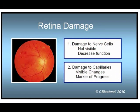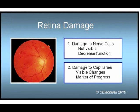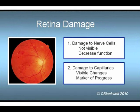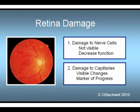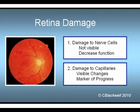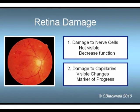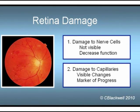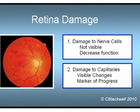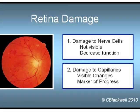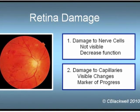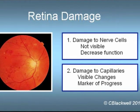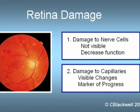In diabetes, damage to the retina can be divided into two categories. Category 1 is damage to the nerve cells that make up most of the retina. In this early stage, a decrease in nerve function precedes blood vessel damage. You can't see this by looking into the eye, but it can be measured by tests like contrast sensitivity and color vision. Category 2 is damage to the blood vessels, which can be seen by looking into the eye. Progression of retinal damage is followed by monitoring the visible changes.